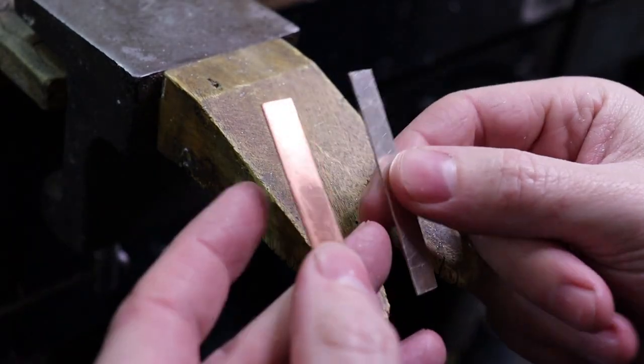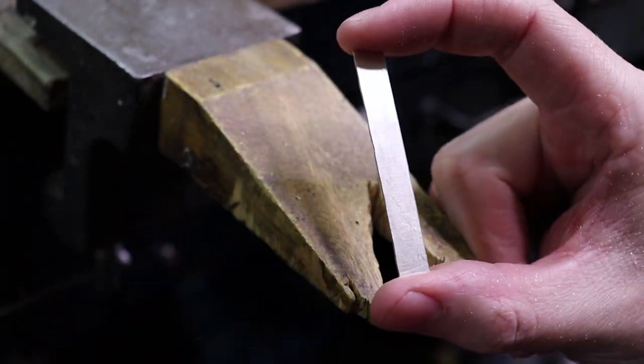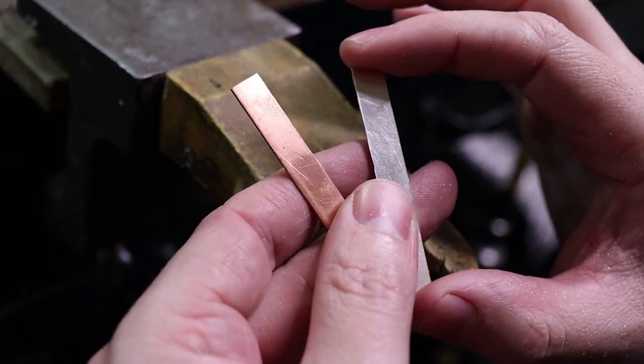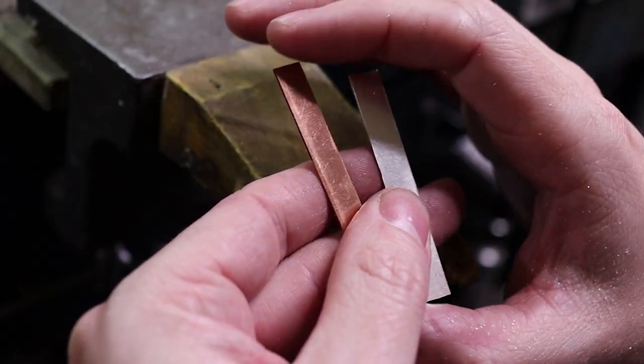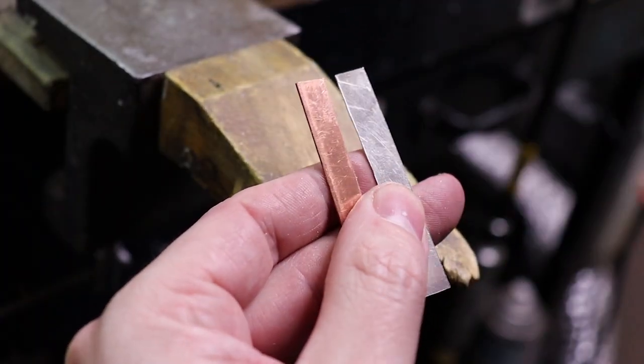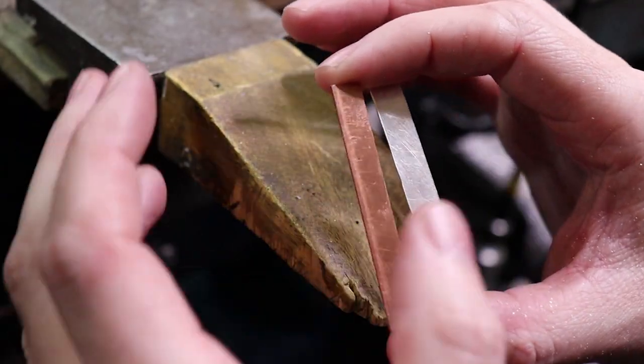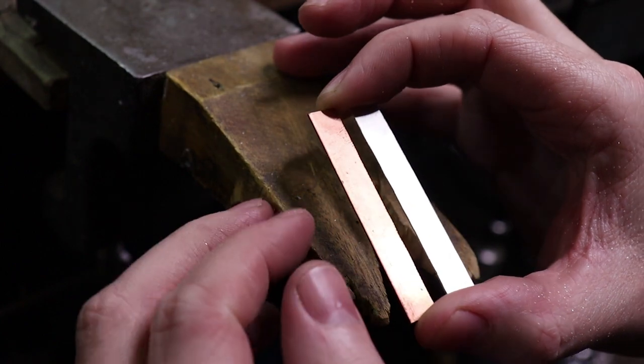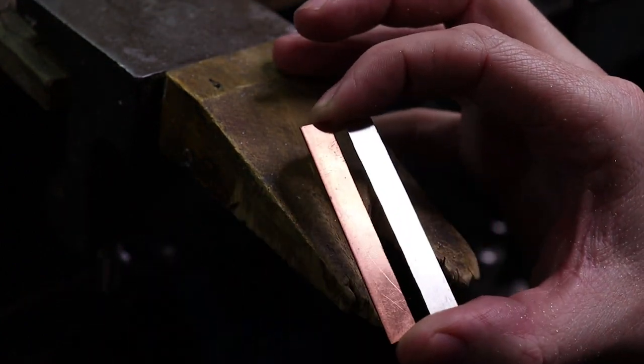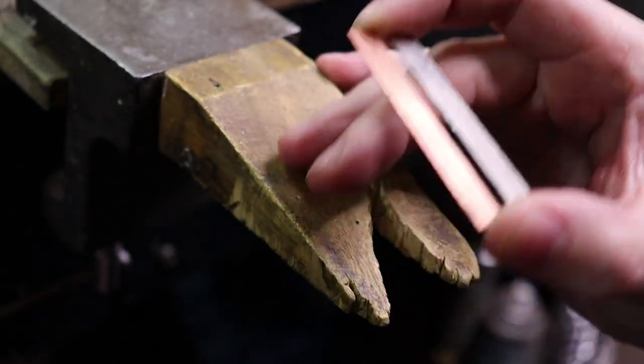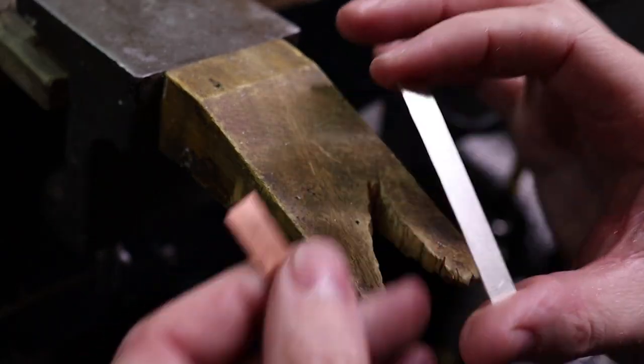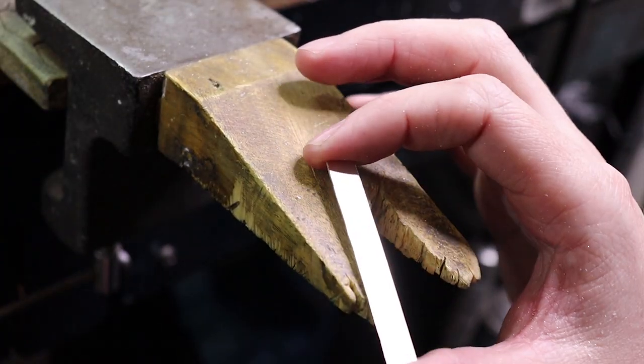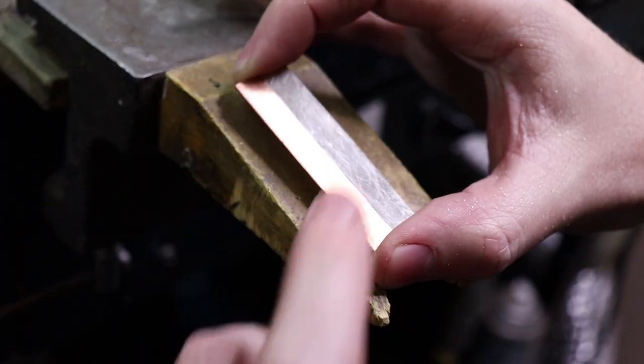That is our silver one done. Now we need to do the same thing with our copper. There we go, we have both pieces now. If you don't want to work with silver for this, if it's your first time and you're worried about cutting straight lines, just use copper and brass. Then you can learn on cheaper materials without worrying about silver, which takes stress out of this. Cutting straight lines is a skill you have to work on.